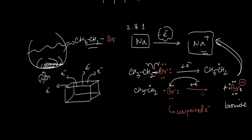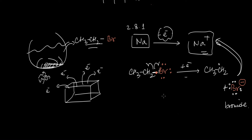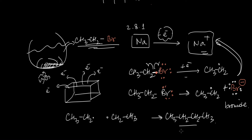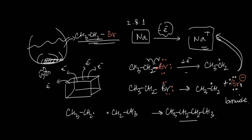There won't be only one radical formed — there will be loads of ethyl bromide molecules coming in contact with sodium, forming many radicals. These radicals can then combine to form a butane molecule. Now you can see where the symmetry thing comes from — both radicals are ethyl radicals combining to give butane.